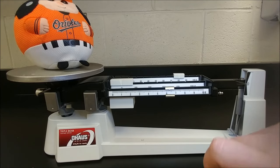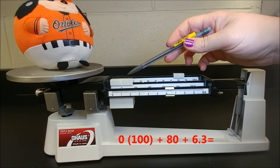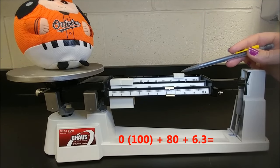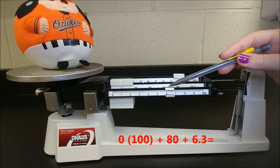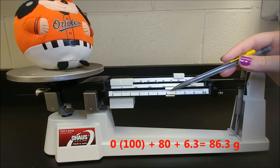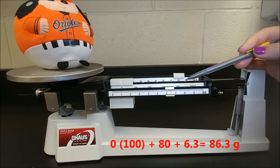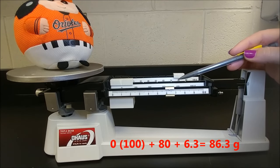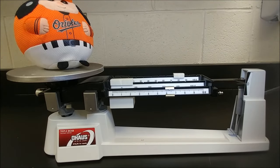And just like that, it's in a line. You can see the line of the arm lines up perfectly with the zero. So we have zero hundreds plus 80 grams plus 6.3. That means zero plus 80 plus 6.3, or 86.3 grams, is how much mass is in that Oriole bird.